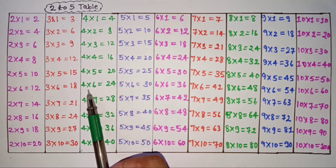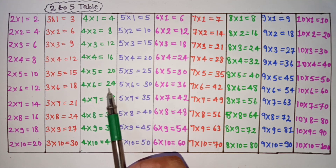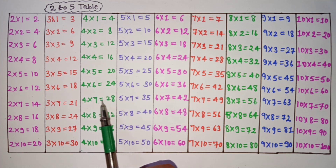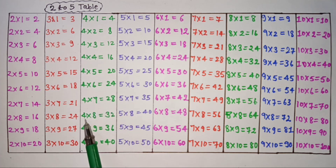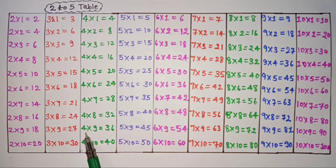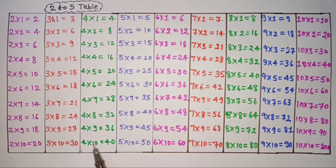4 6's are 24, 4 7's are 28, 4 8's are 32, 4 9's are 36, 4 10's are 40.